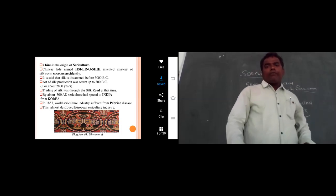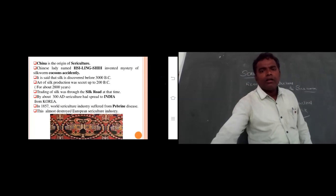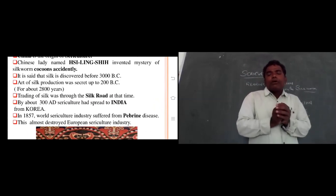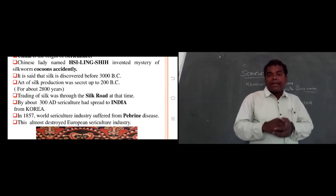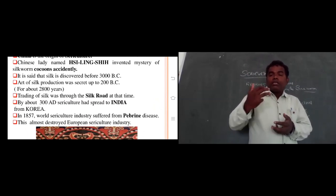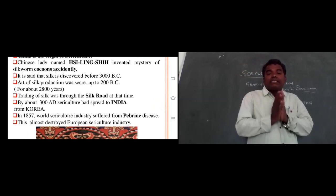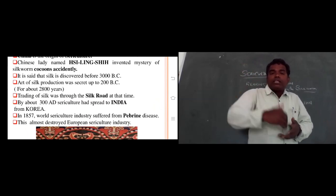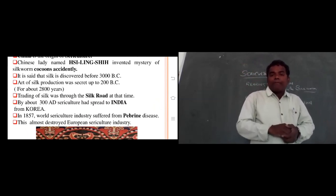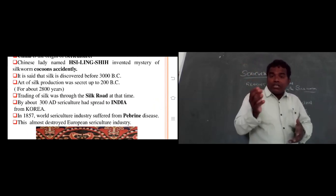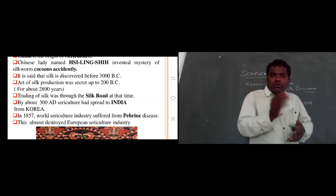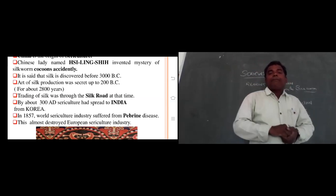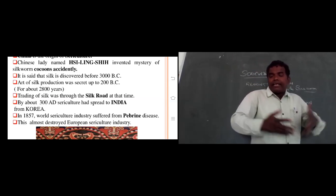It is said that silk was discovered before 3000 BC — approximately 2800 to 3000 BC. Silk production was kept a secret for about 200 years in China. Later it spread throughout the world. Trading of silk was conducted through the Silk Road.